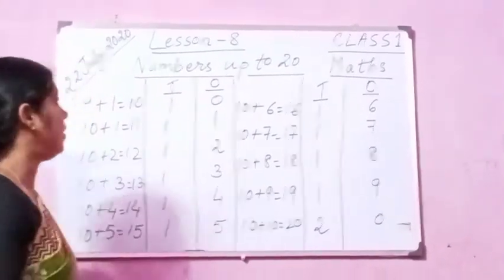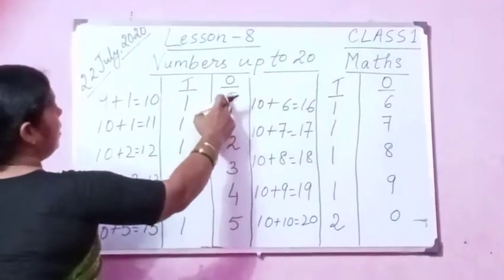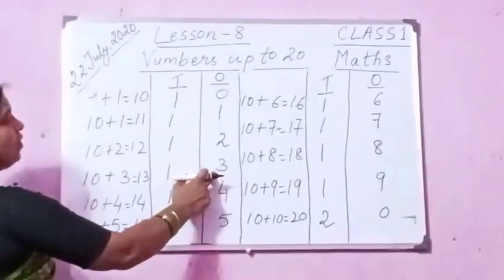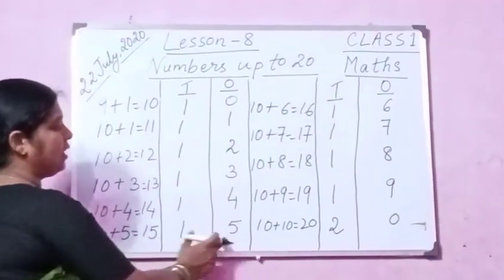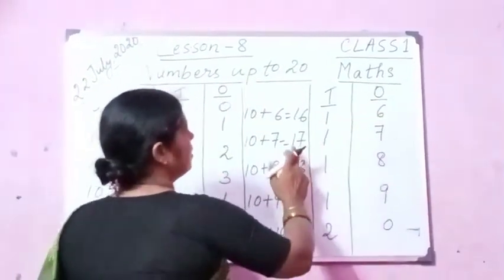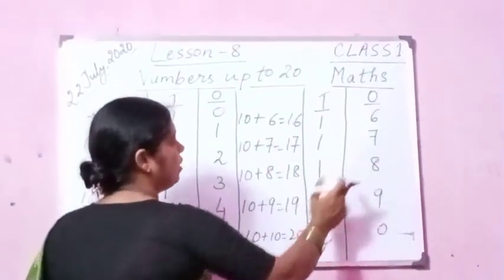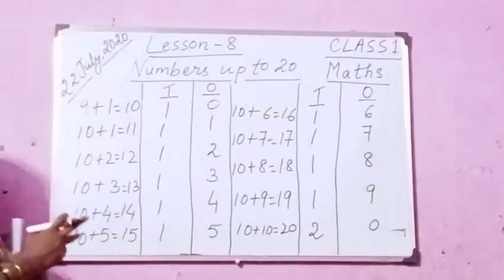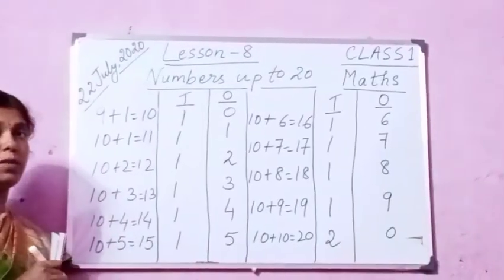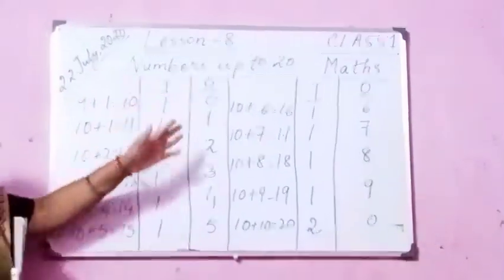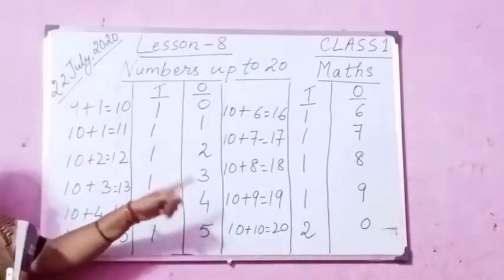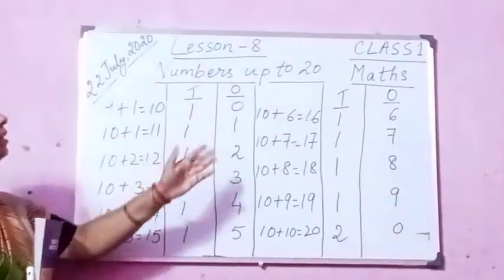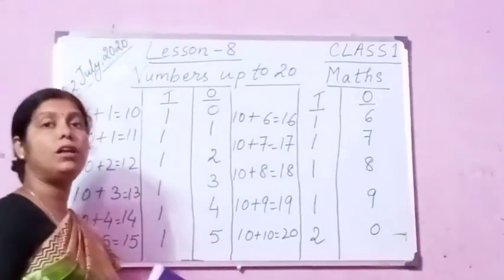You have to keep these in mind, children. Let's go over them once again: 10 — 1 ten and 0 ones; 11 — 1 ten and 1 one; 12 — 1 ten and 2 ones; 13 — 1 ten and 3 ones; 14 — 1 ten and 4 ones; 15 — 1 ten and 5 ones; 16 — 1 ten and 6 ones; 17 — 1 ten and 7 ones; 18 — 1 ten and 8 ones; 19 — 1 ten and 9 ones; and 20 — 2 tens and 0 ones. Please see the board and write this in your maths copies. This is lesson 8, numbers up to 20. So we are learning all the numbers from 10 to 20. Thank you.